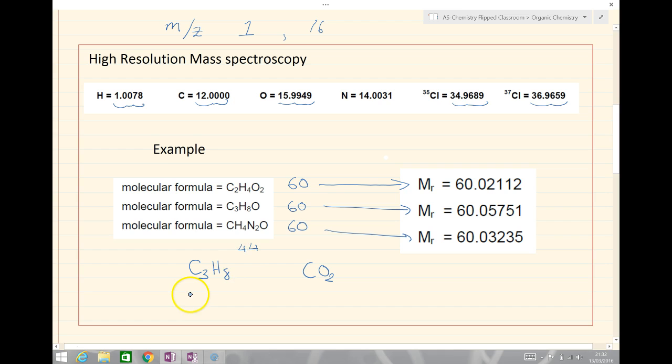But we can see here they would have slightly different values. We would work them out by doing 3 times 12.000 plus 8 times 1.0078.